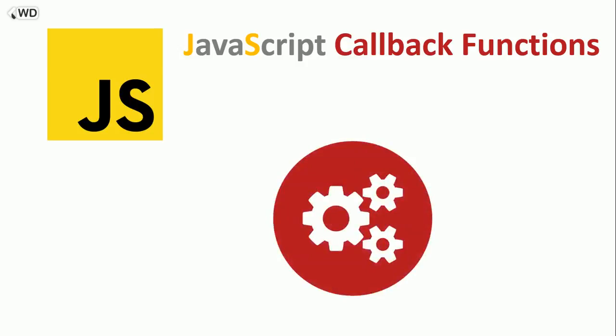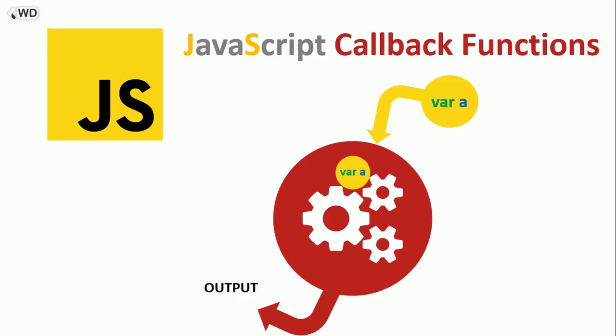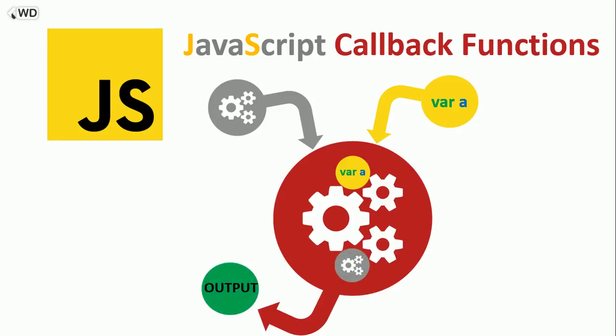In JavaScript, a function can take variables such as strings, numbers, booleans, etc. When it takes a variable, it does something with it and returns an output. Now in JavaScript, a function can also take another function as an argument. It will then callback or execute the code inside that function at a given time, and return an output.